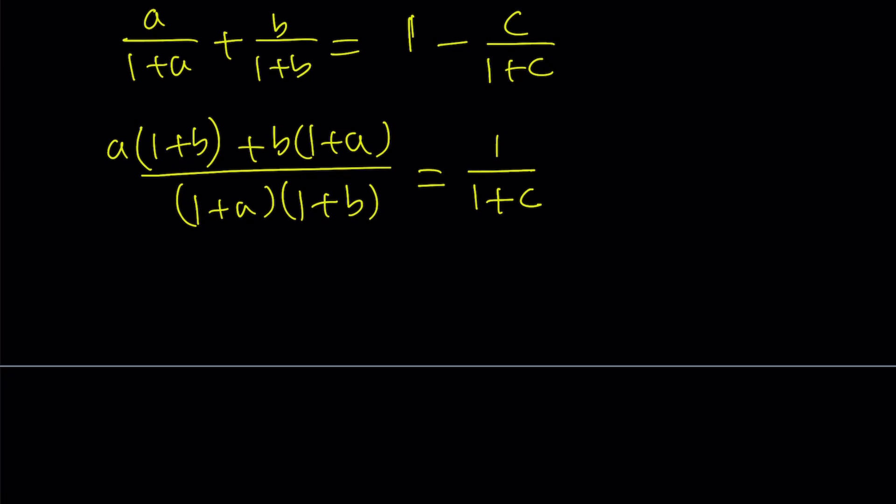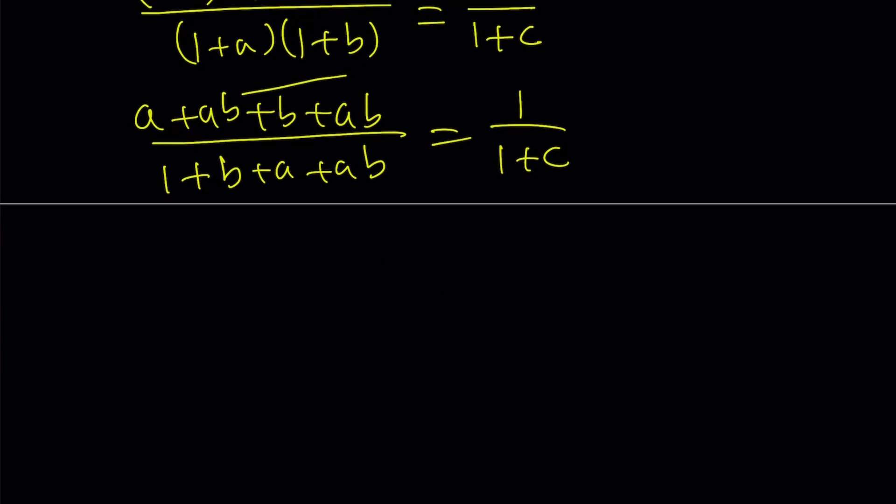So it's going to be a times 1 plus b plus b times 1 plus a divided by 1 plus a times 1 plus b. And here if you make a common denominator, we're going to get 1 plus c minus c. The c cancels out and we end up with 1 over 1 plus c. Something simple. Now let's go ahead and simplify what's on the left-hand side, and then we're going to cross-multiply.